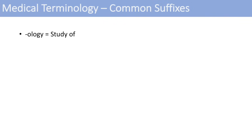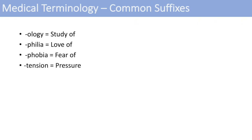Here are some common suffixes in medical terminology. -ology is the study of — like biology, nephrology, or gastroenterology, the study of the gastrointestinal system. -philia means the love of, and the opposite, -phobia, is just the fear of. Another one people don't think of is -tension, which means pressure — so hypertension means high blood pressure.